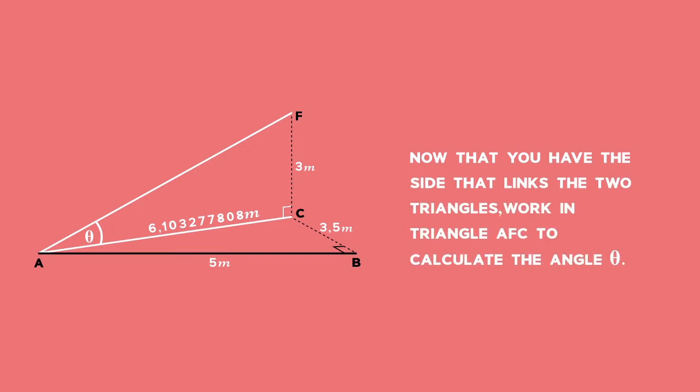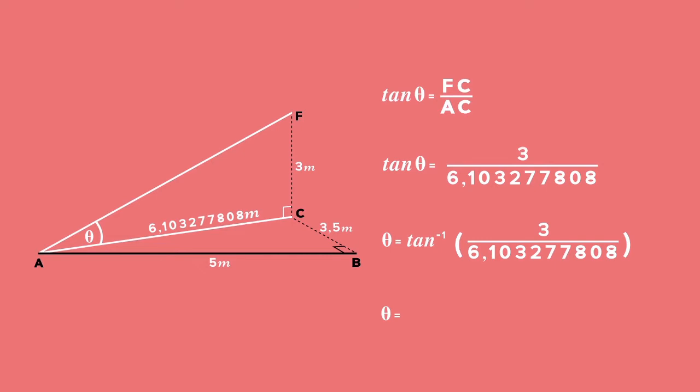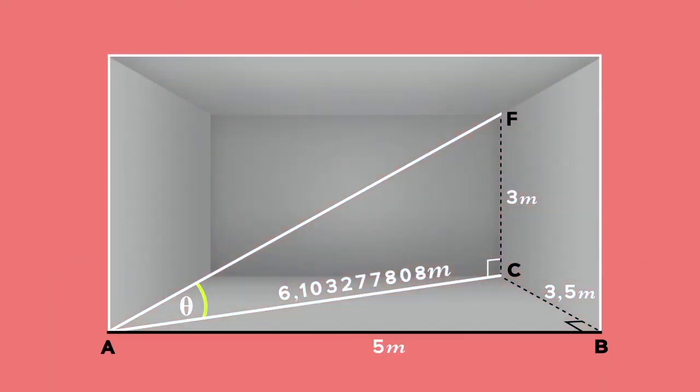Now that you have the side that links the two triangles, work in triangle AFC to calculate the angle theta. Since triangle AFC is right angled, we use the definition of tan theta. Tan theta is equal to opposite over adjacent. Therefore tan theta is equal to the ratio FC over AC. Substitute values for FC and AC and use your calculator to get theta is equal to 26.2 degrees. Therefore the angle formed between diagonal AF and the floor of the room ABCD is 26.2 degrees.